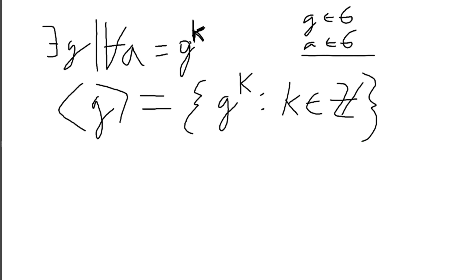The entire group is cyclic if it equals this generated set — meaning every element of it can be generated by applying the group's operation to one element a certain number of times. For some element you may apply the operation twice, for another just once, leaving the element as is, and for another you may need to apply the operation 10 times to the generator in order to produce that element.